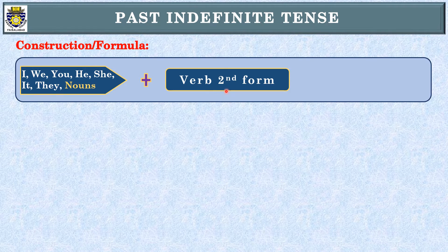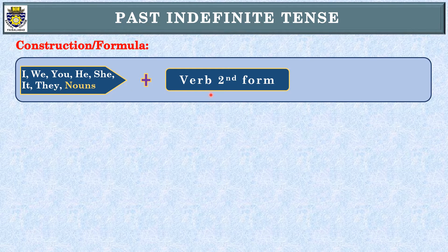We will use the second form of the verb. For example, 'write' becomes 'wrote' in simple sentences. In past indefinite tense, for simple sentences we use the second form of the verb. After that, we complete the sentence with the object. This is the simple sentence construction.